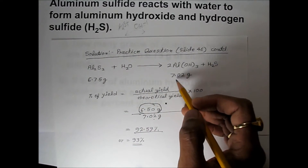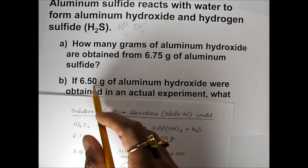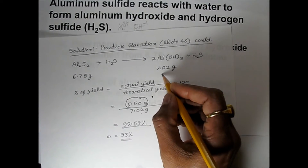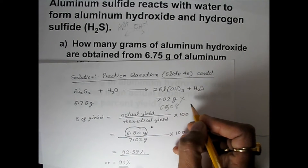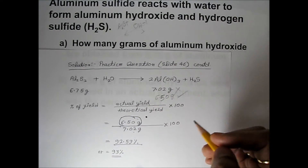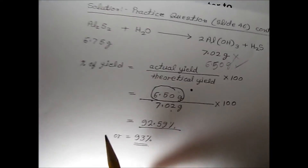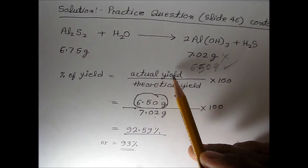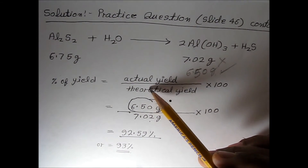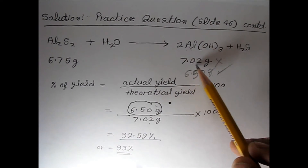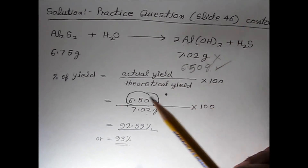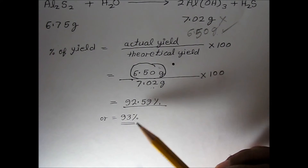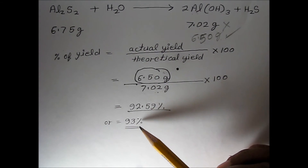Rather than getting 7.02 grams, in the actual experiment we are getting only 6.50 grams. The percentage yield is calculated as: actual yield divided by theoretical yield, multiplied by 100. So: 6.50 ÷ 7.02 × 100 = approximately 93% yield was obtained.